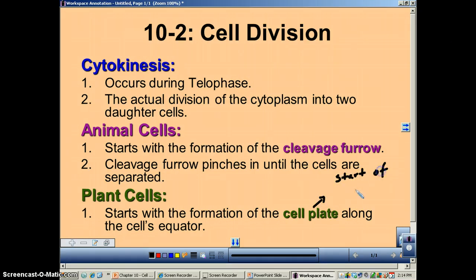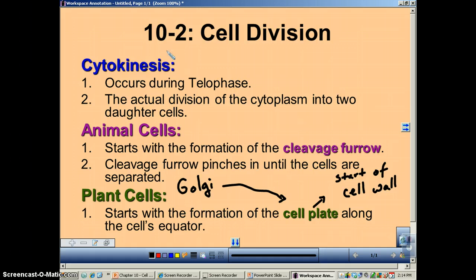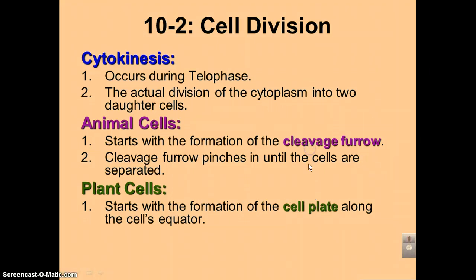The Golgi body is involved in this process. The Golgi is going to make the vesicles that contain the cellulose that's going to create the cell plate. To remember this, just think of the Golgi liking to have a plate of salad — plants form a salad plate, the Golgi likes to eat it. Kind of corny, but it works.